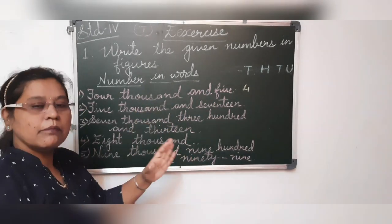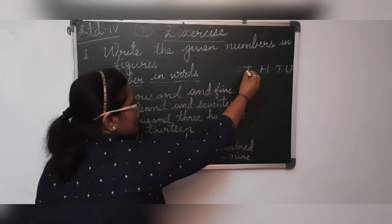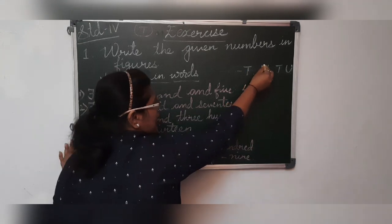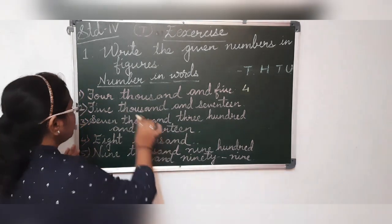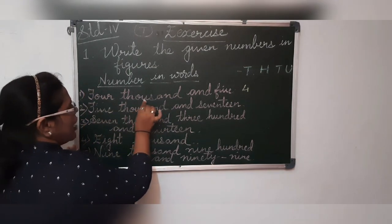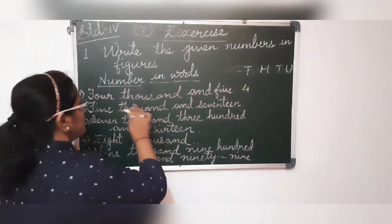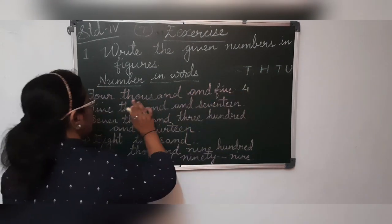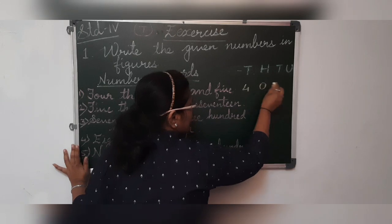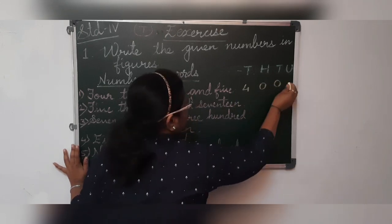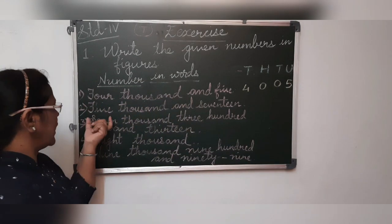Whenever you are writing numbers in figures, you have to remember you have to start from the thousands place. First you have to write thousands, hundreds place, then tens place and then units place. So here, first sum is 4,005. Here no hundreds place and tens place is given to you. So it is 4,000, no value for hundreds. So, 0, tens place 0 and 5 are units. So it is 4,005.